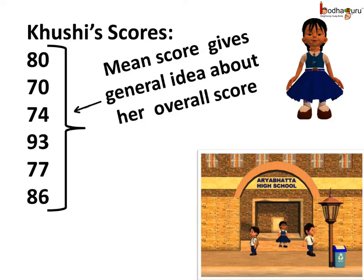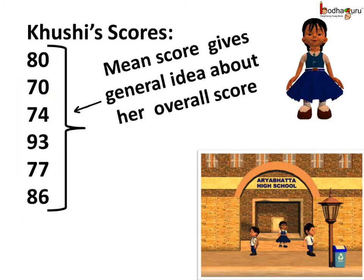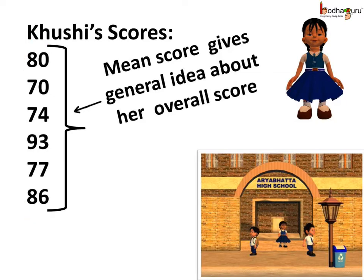Why do we need arithmetic mean? Kushi got different scores in different subjects. She scored 80, 70, 74, 93, 77, and 86 in 6 different subjects. She needs a 75 average or mean score to get admission in a good school. Arithmetic mean gives a general idea about her score — that is, it gives the idea about what kind of score she gets.